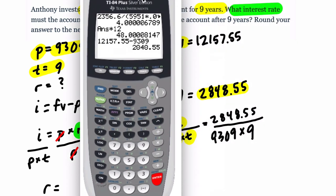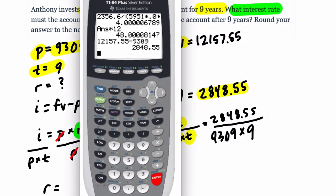Okay. So what is that? 2848.55, the interest, divided by, now you want to have parentheses here, 9309 times 9.